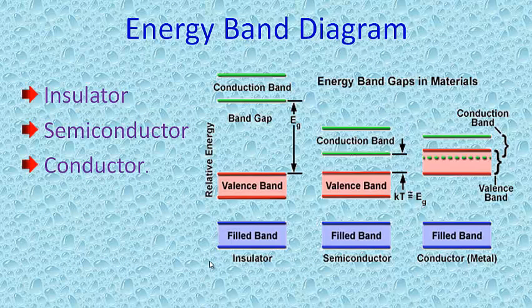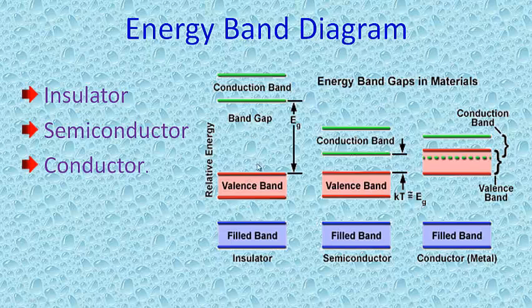We will see the energy band diagram mainly for insulator, semiconductor, and conductor. Insulators have no free charge carriers and are thus non-conductive. The energy band diagram for an insulator indicates electrons are completely filled in the valence band. The gap between the valence band and the conduction band is very large, and the band gap difference is more in the case of insulator.